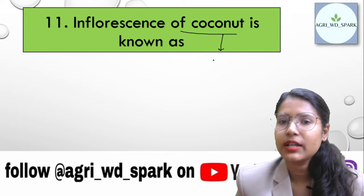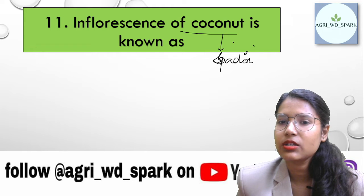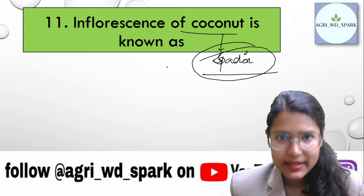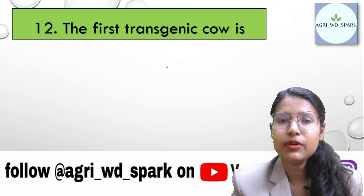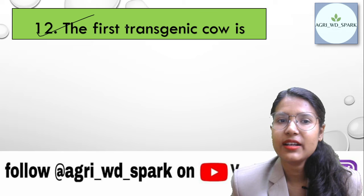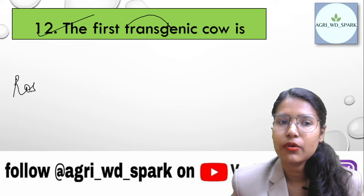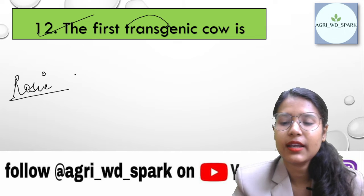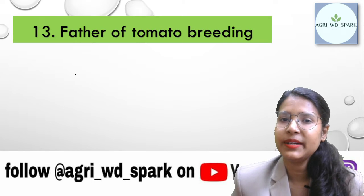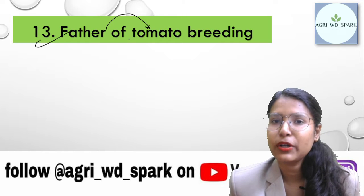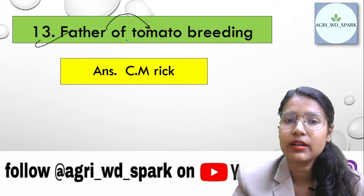The inflorescence of coconut is known as a spadix. Next question: the first transgenic cattle was named Rosie.